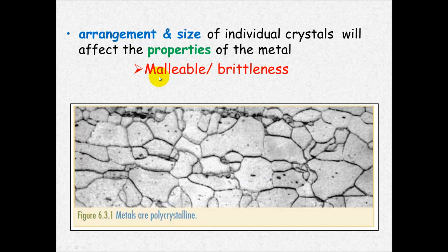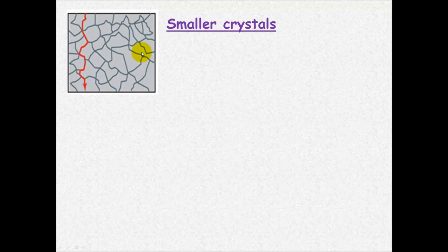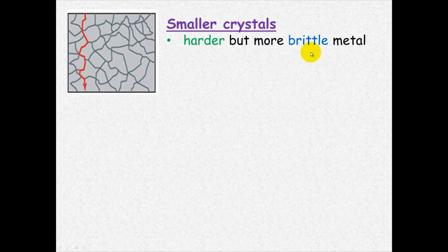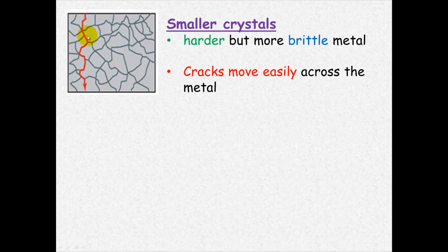These properties importantly are how malleable or hard or how brittle the metal is. If we have small crystals such as in this diagram here, you will form a harder but a more brittle metal. The reason for this is that cracks can move quite easily and quickly across the metal.